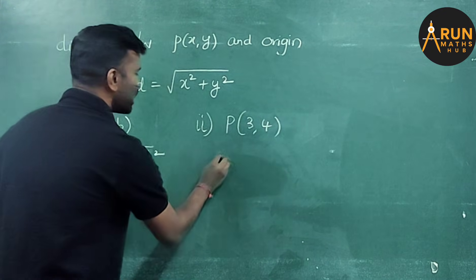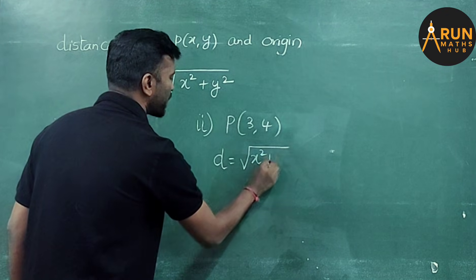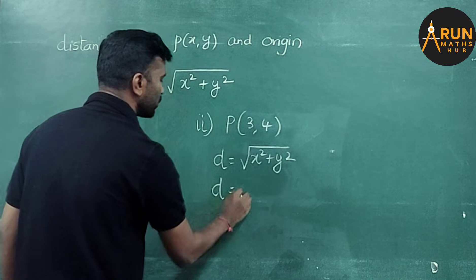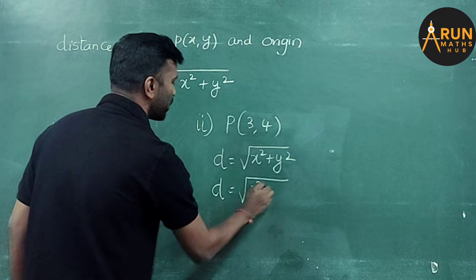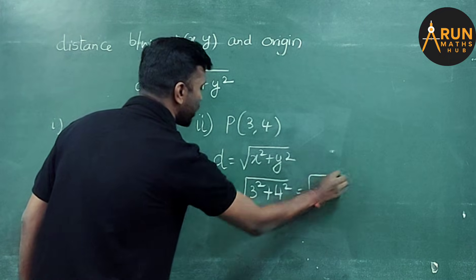So the distance will be d equals square root of... You should write the formula d equals square root of x square plus y square. What is x here? 3. So 3 square plus 4 square.